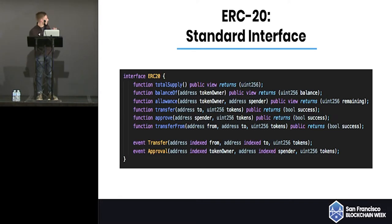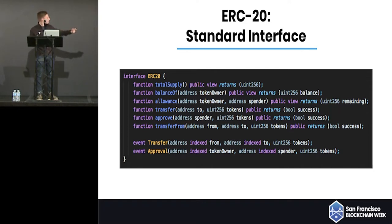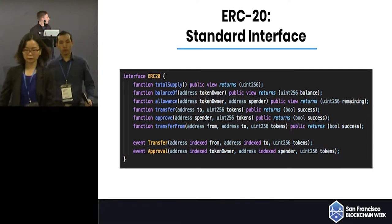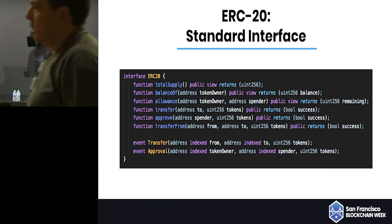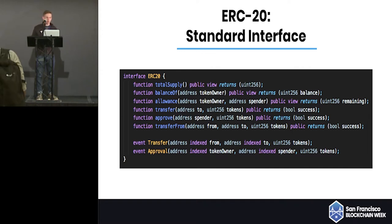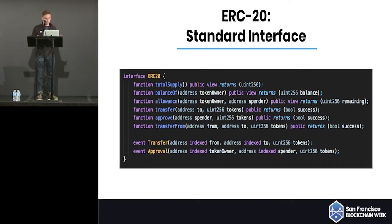The interface is just six functions, two events. The first three functions are what we call in Solidity constant functions — they just read blockchain data. The first is totalSupply, which returns the supply of tokens in existence, used to calculate things like market cap and record minting or burning. The second, balanceOf, takes an Ethereum address and returns the balance of that token owner. The third is allowance — the ability to give another Ethereum account or smart contract a spendable amount of tokens that the token holder approves them to spend.